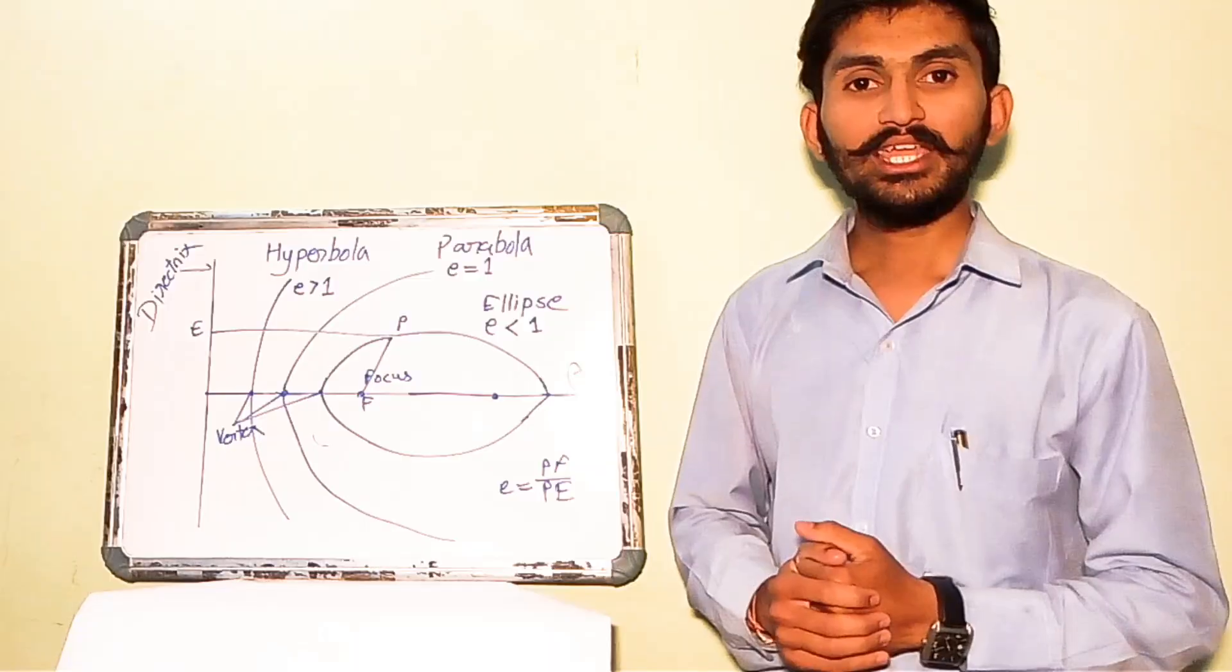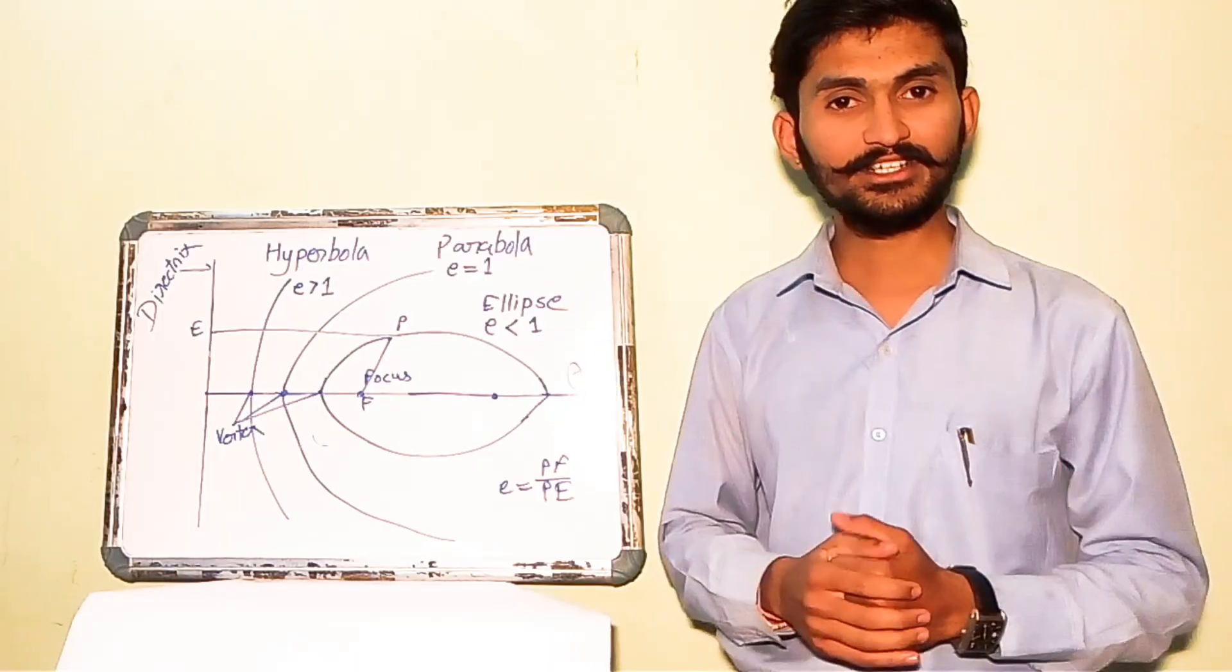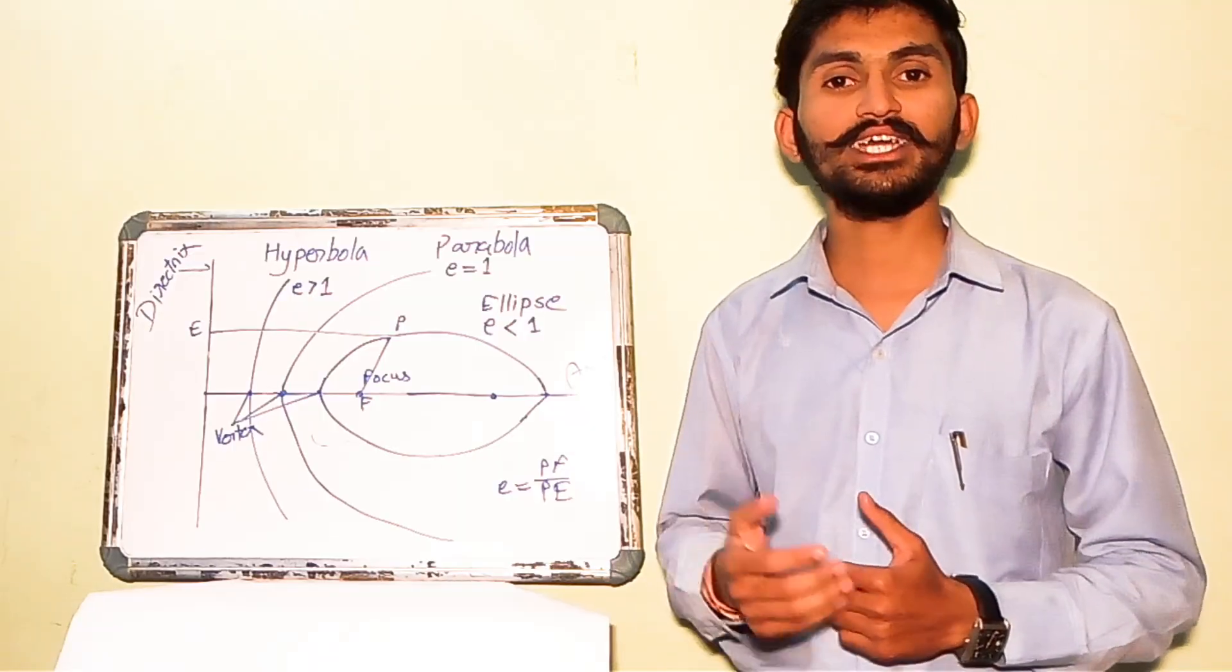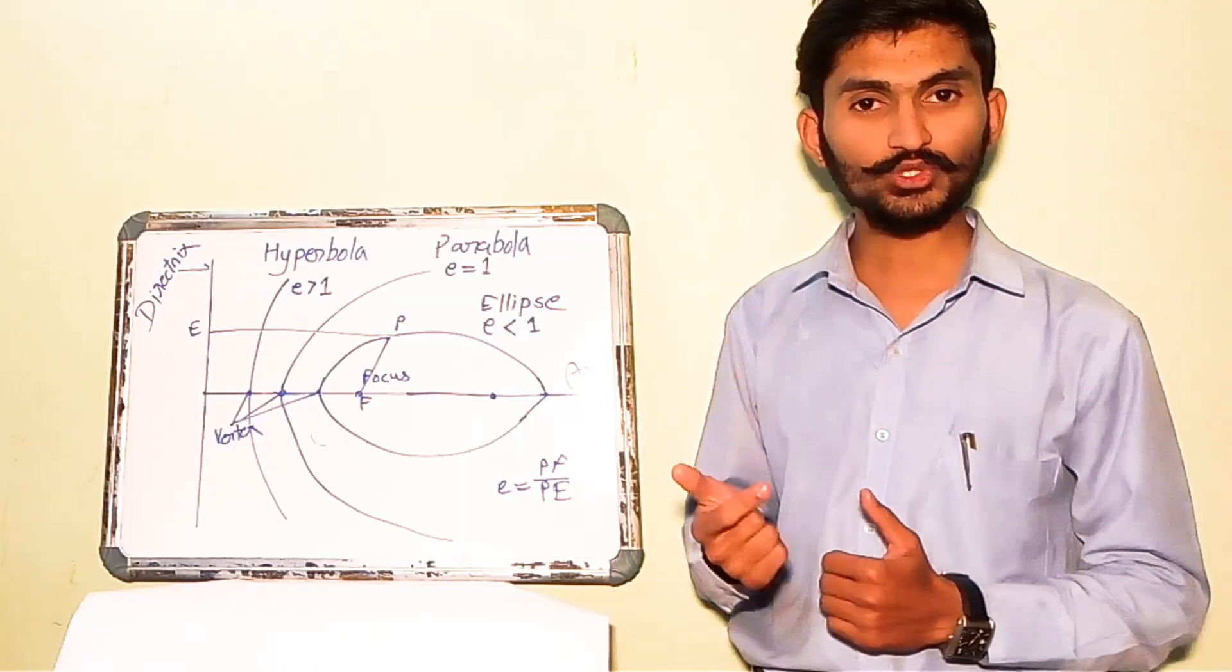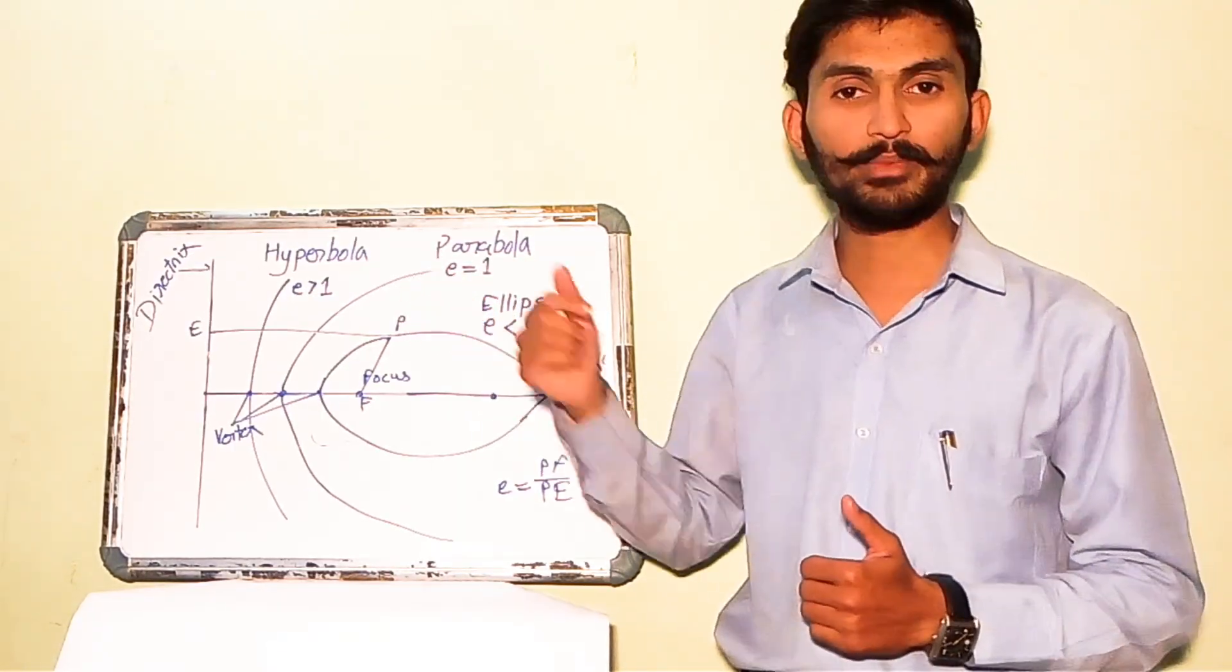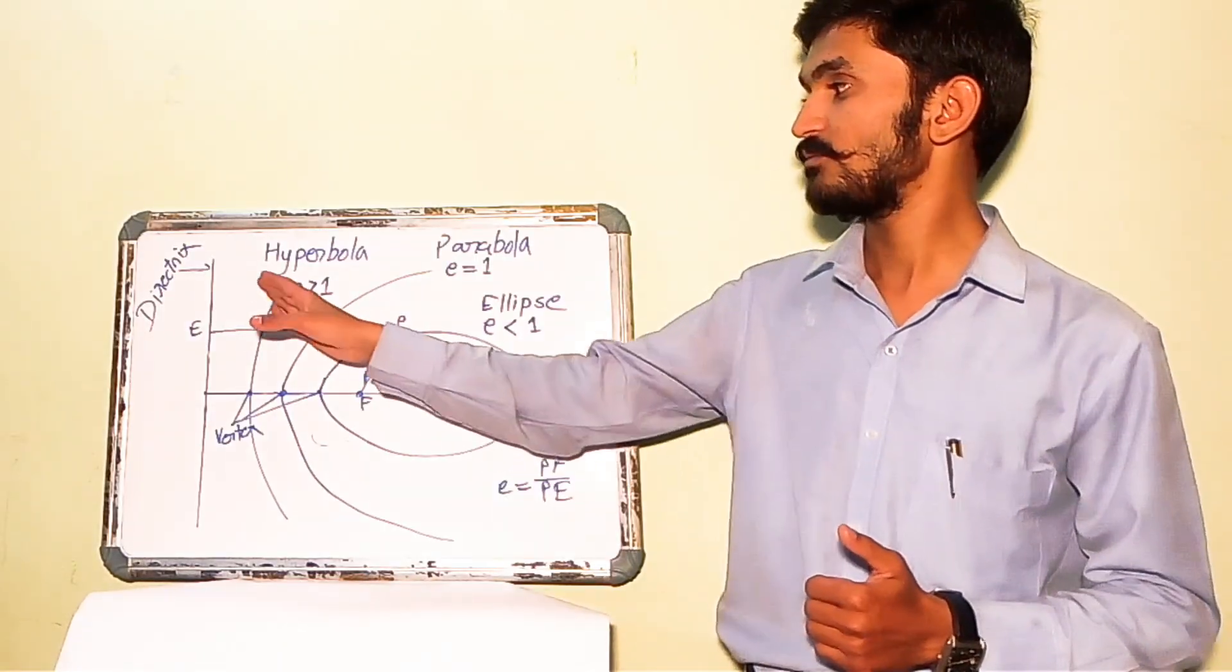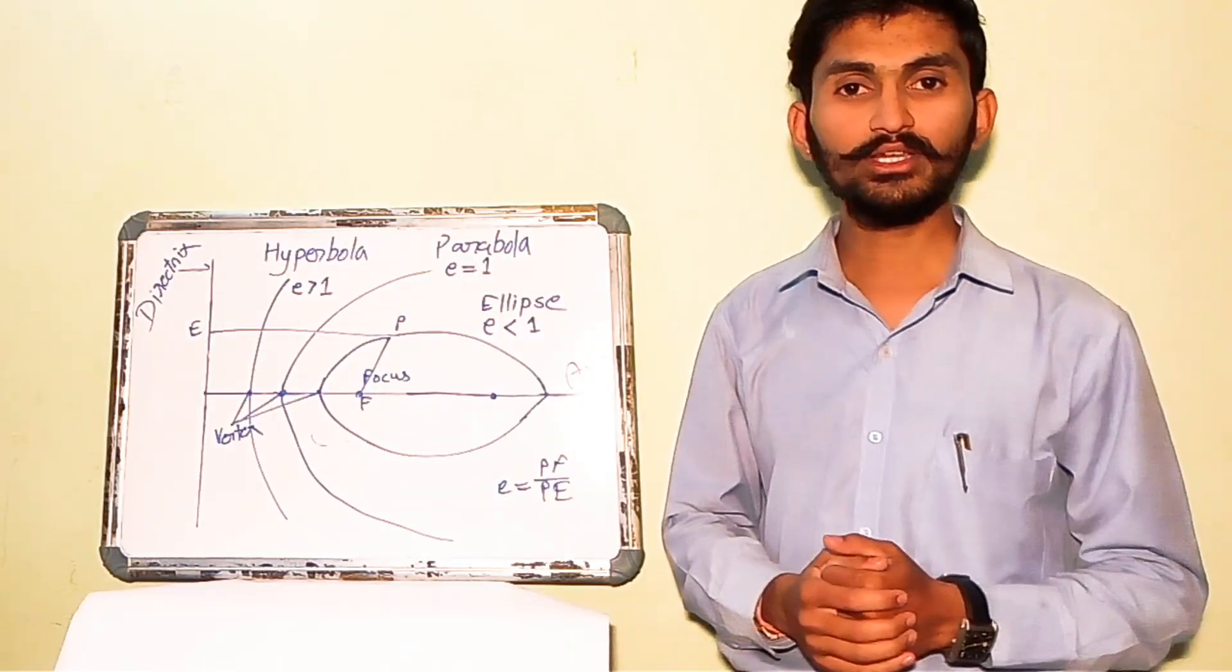If the eccentricity is less than 1, then the conic is called ellipse. And if the eccentricity is equals to 1, then the conic is called parabola. And if the eccentricity is greater than 1, then the conic is called hyperbola.